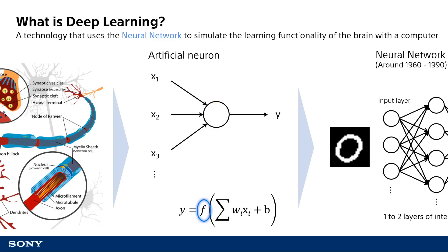Then the activation function F is used to realize the functionality of the nerve cell. If the value is above a certain threshold, the electrical signal is transmitted to the next neuron as-is. If it is below that threshold, no further electrical signal is transmitted. The result of going through this activation function is the output value of this neuron. In this way, artificial neurons can be used to realize the mechanism of nerve cells on a computer.